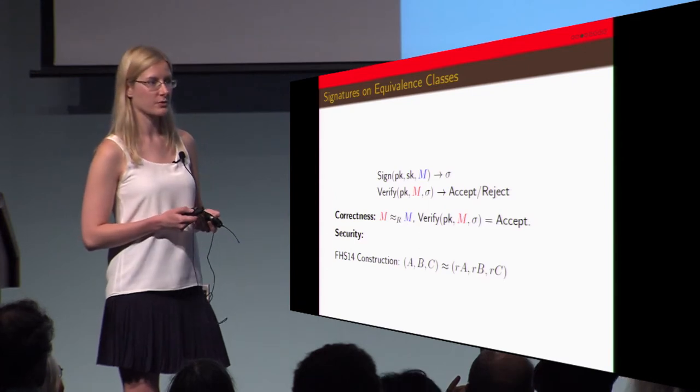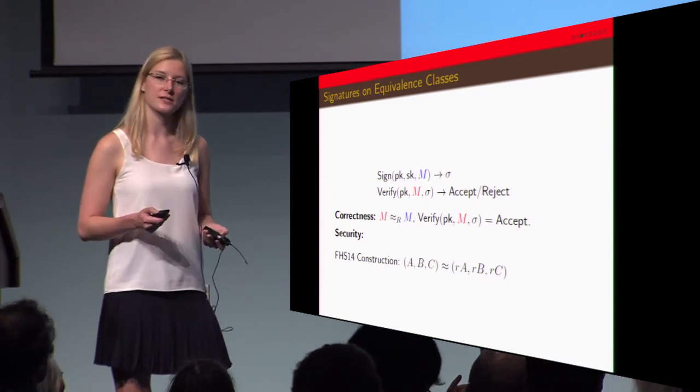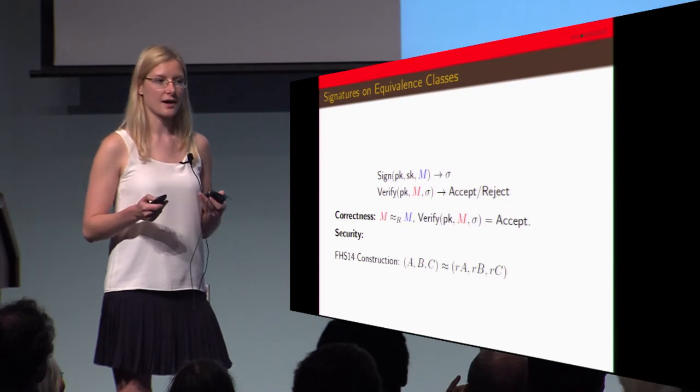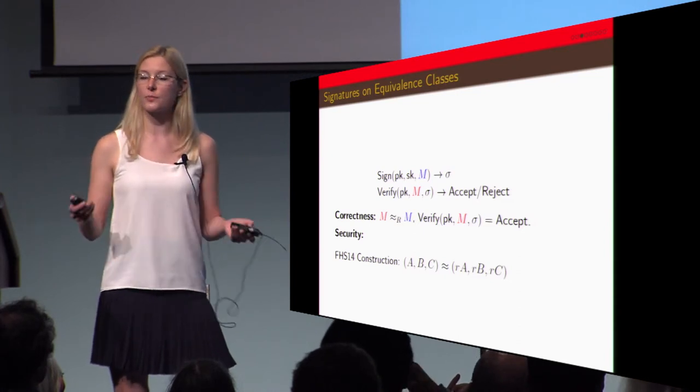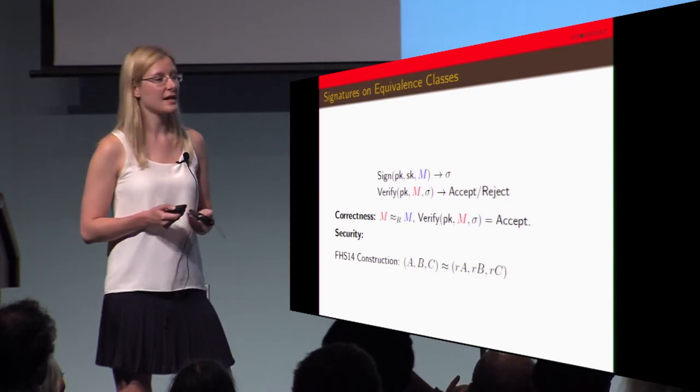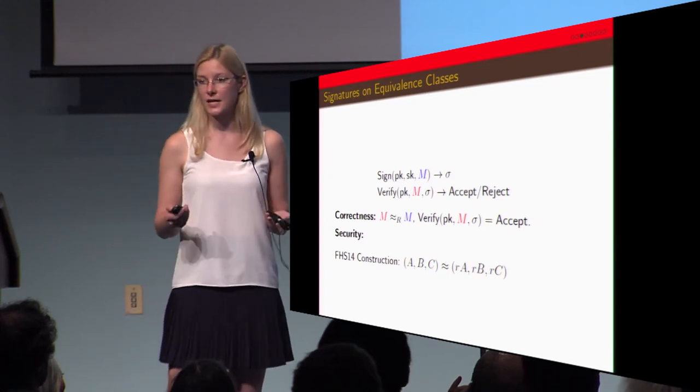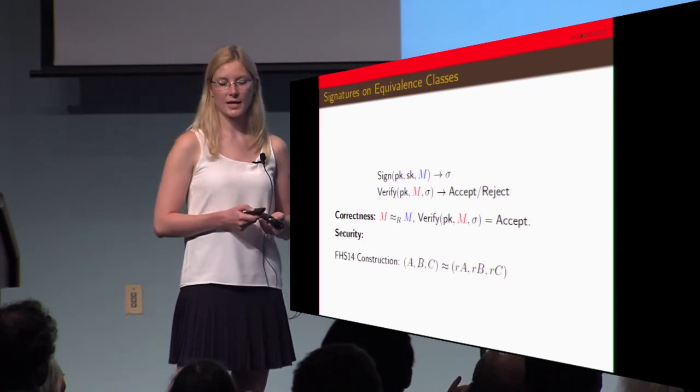They were able to show a result about class hiding which means that the adversary is unable to tell if two messages are in the same equivalence class. And they show that if and only if the DDH assumption holds you get class hiding.